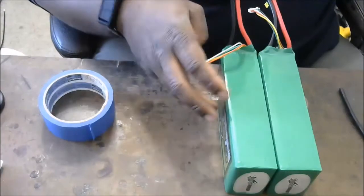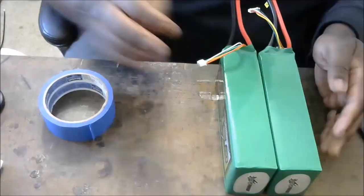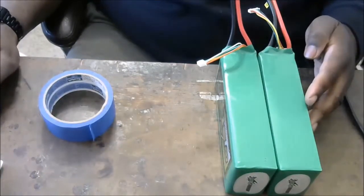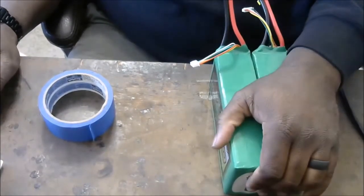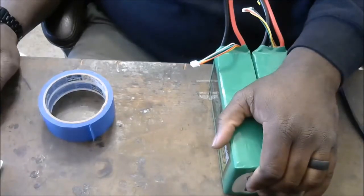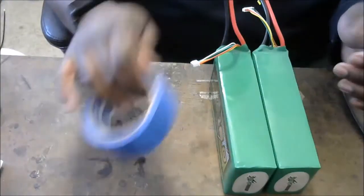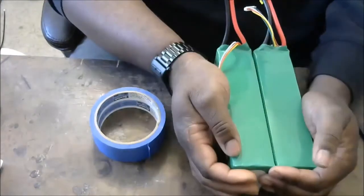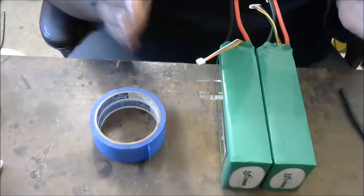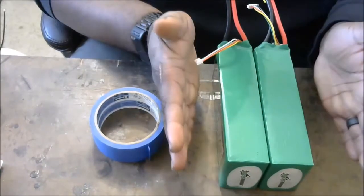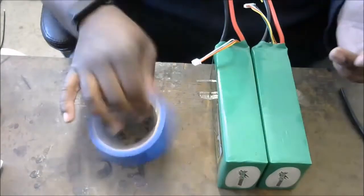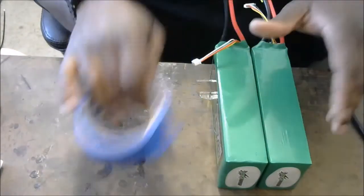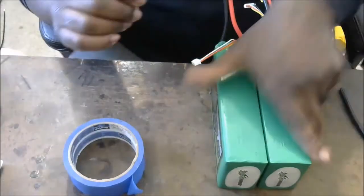The problem that we have with this pack right now is they're just kind of loosey-goosey. So I'm going to put tape on these packs to make them one solid piece. I'm using scotch painter's tape, so it's easily removed. It's holding it together well enough to do what we need to do, but in case I need to undo it, it'll just easily come off and won't rip off labels and everything else.